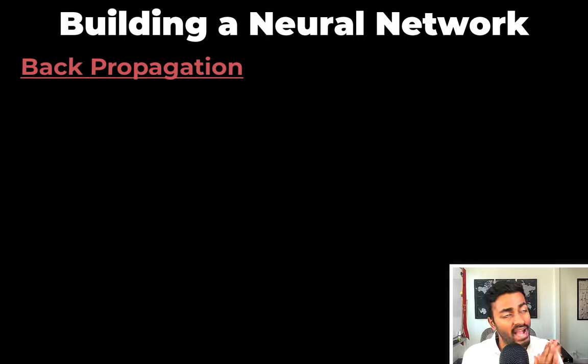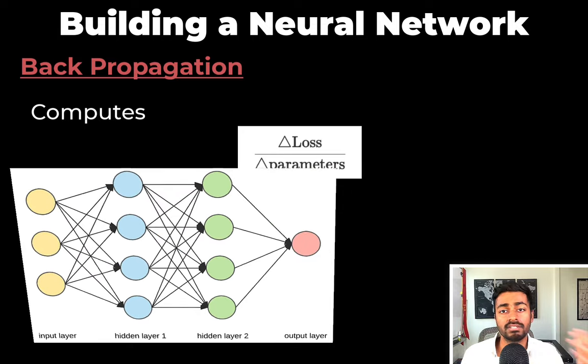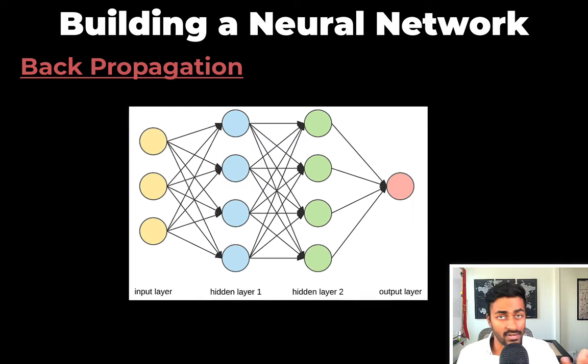Next concept is backpropagation. So backpropagation involves taking the loss and computing the gradient of the loss with respect to the parameters of the model. This gradient is computed from the last layer of the network to the first layer of the network, and hence it is called the backpropagation of errors, or in just simpler terms, backpropagation. Now, why do we do this?